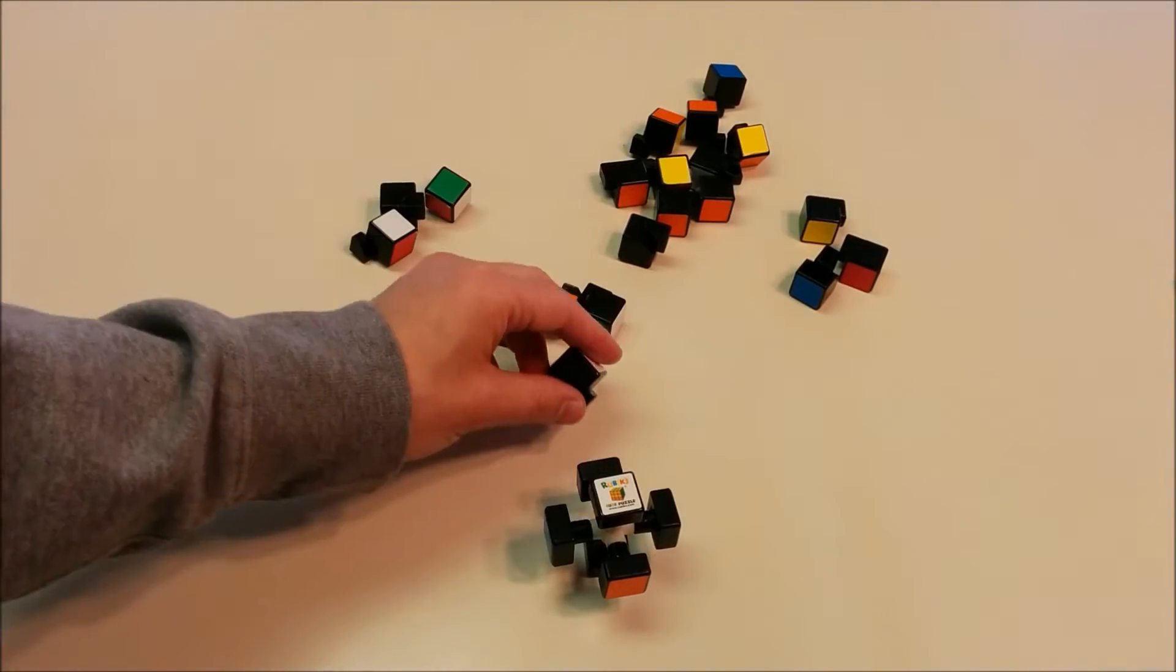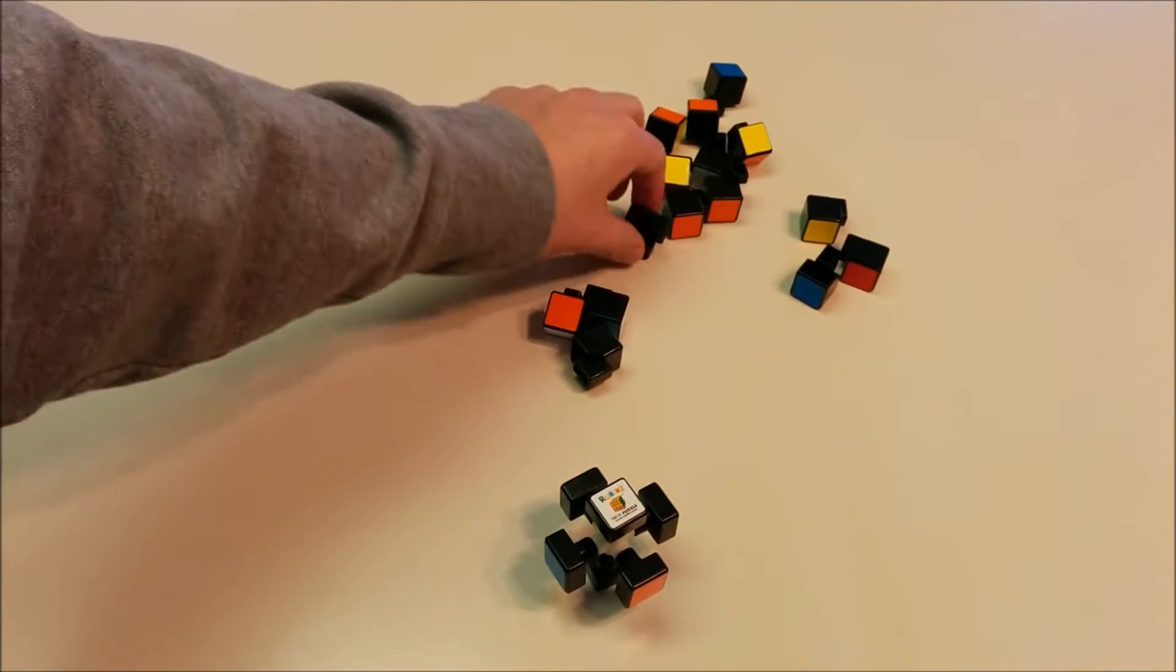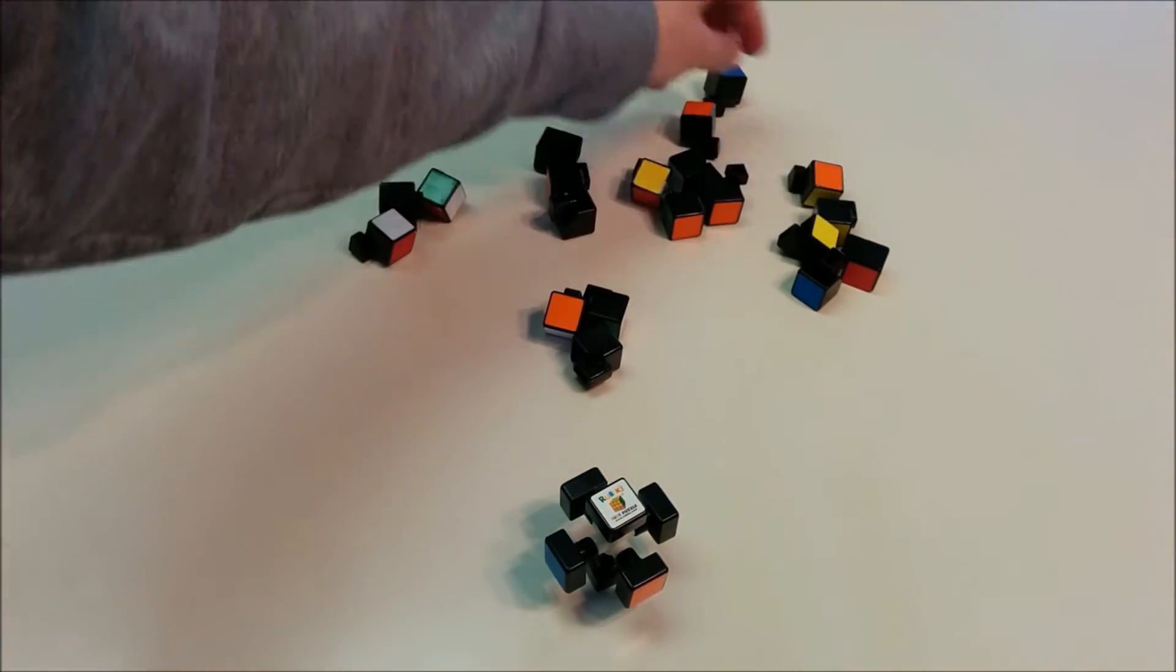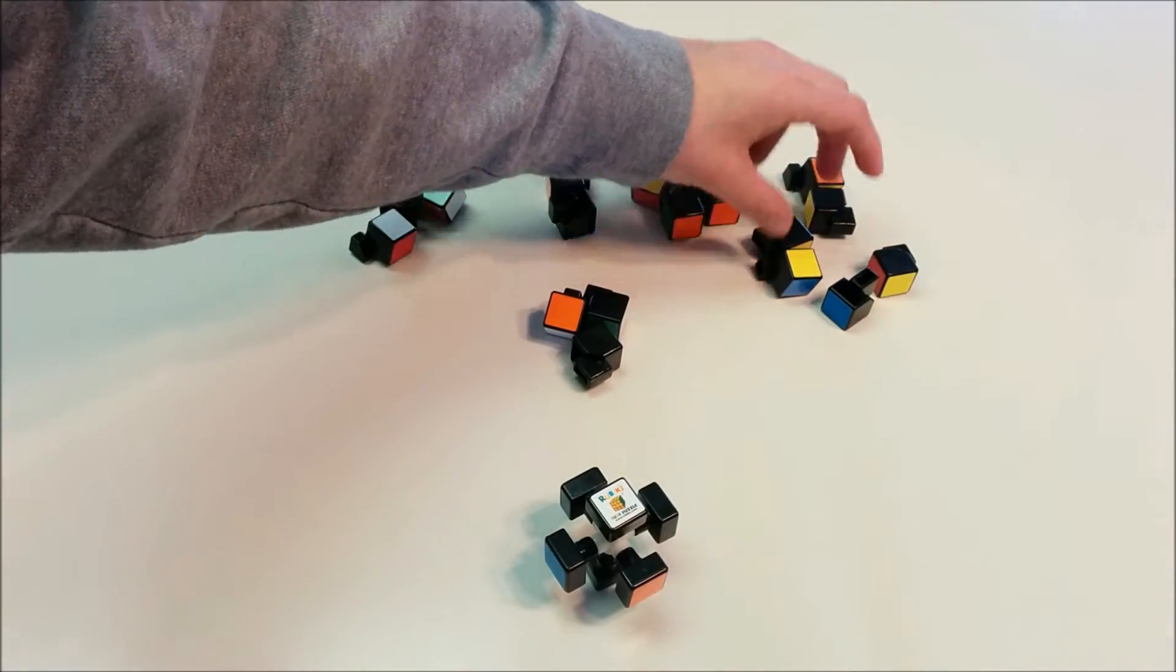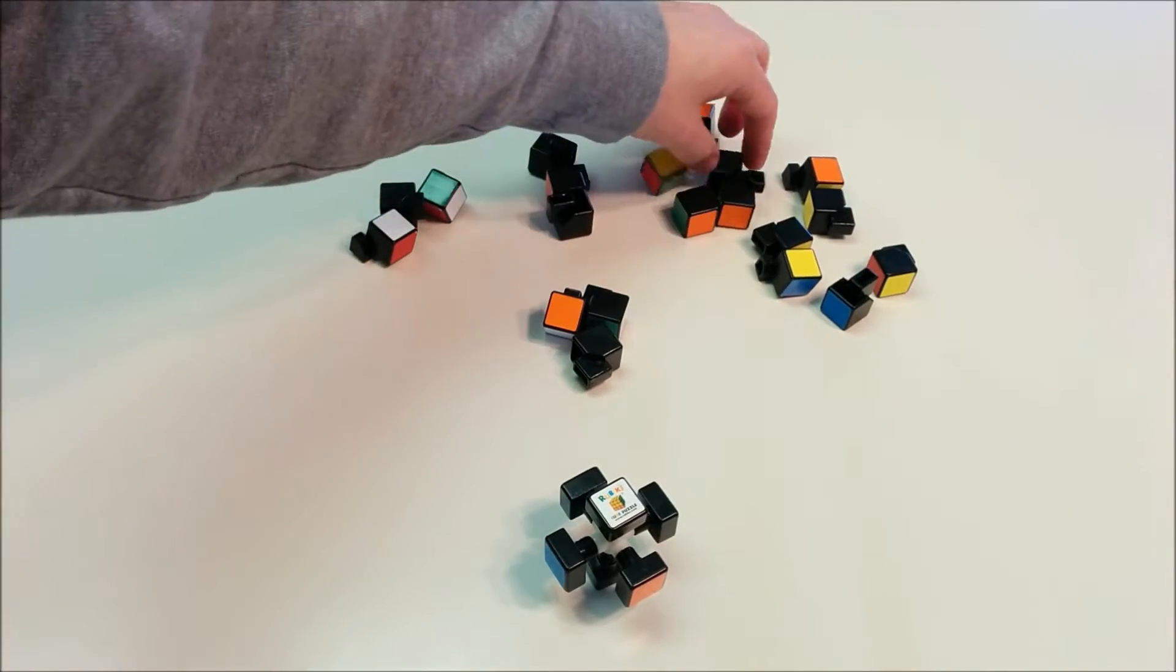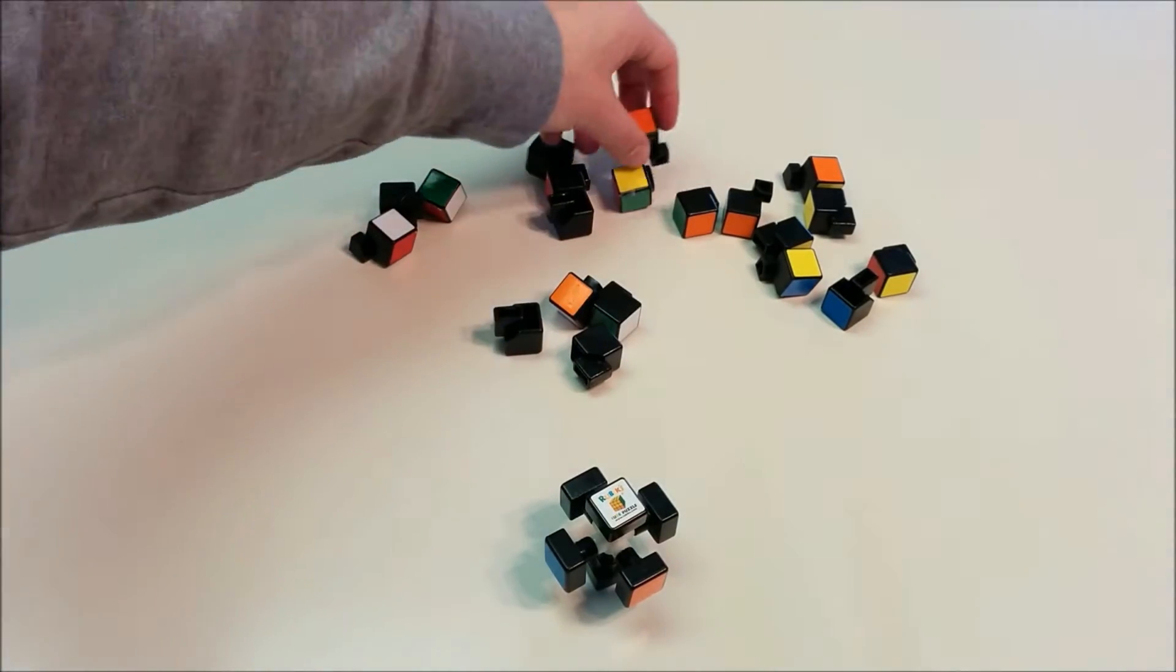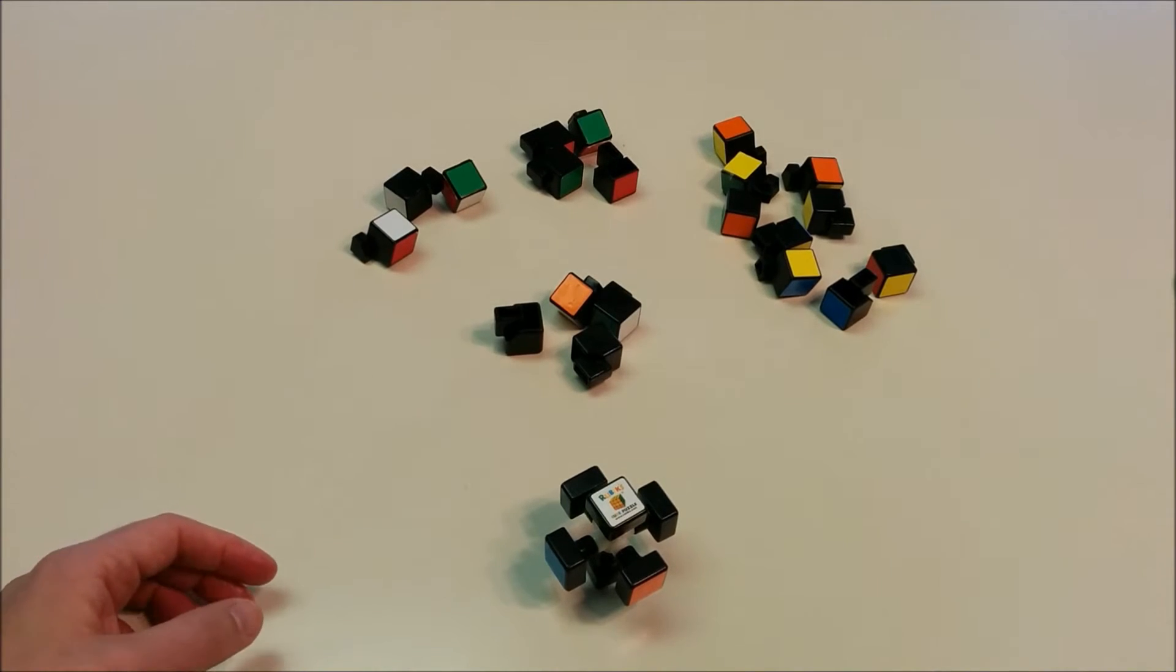Some of the pieces will have white on them, which means they're going to have to match the white center face, and we know those pieces can all be put in a group. Other pieces will be yellow, and that means they'll have to go on the side that's opposite the white face, where there's a yellow center. Some of the pieces will neither have white nor yellow, and those pieces will go in the center.